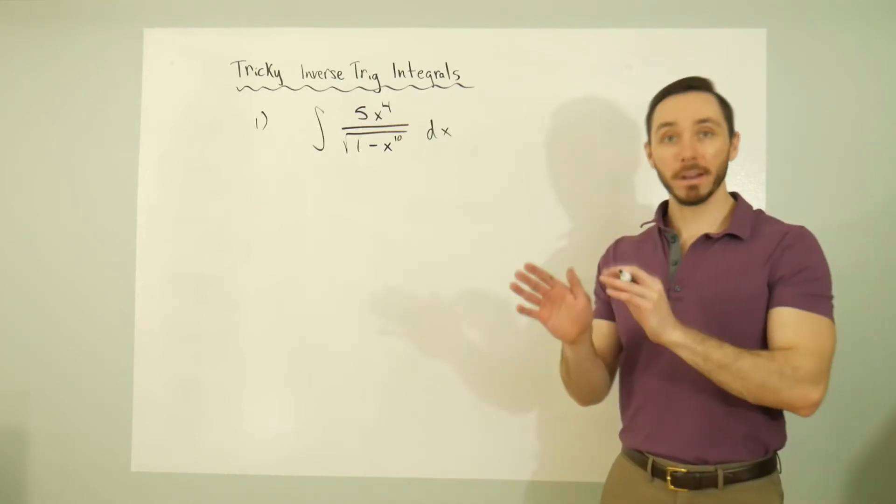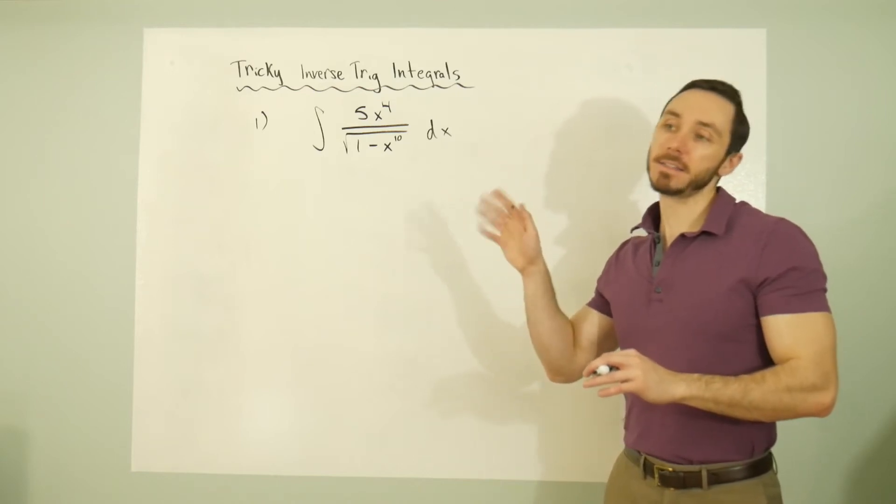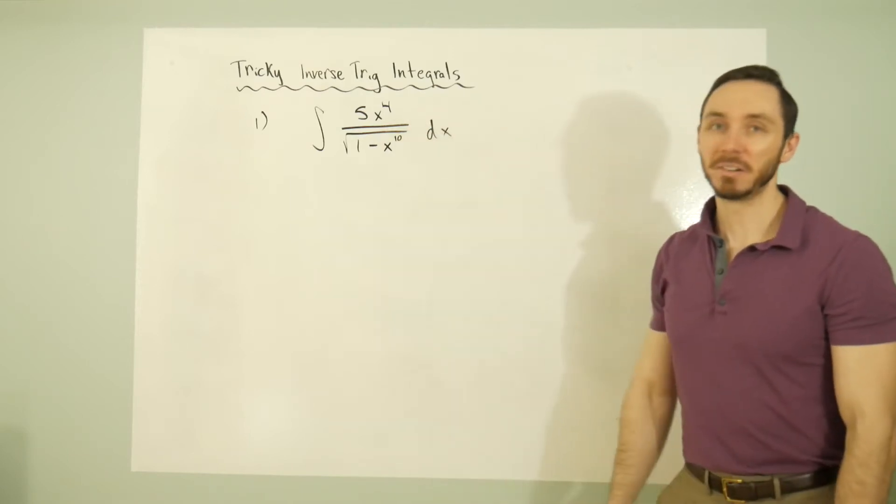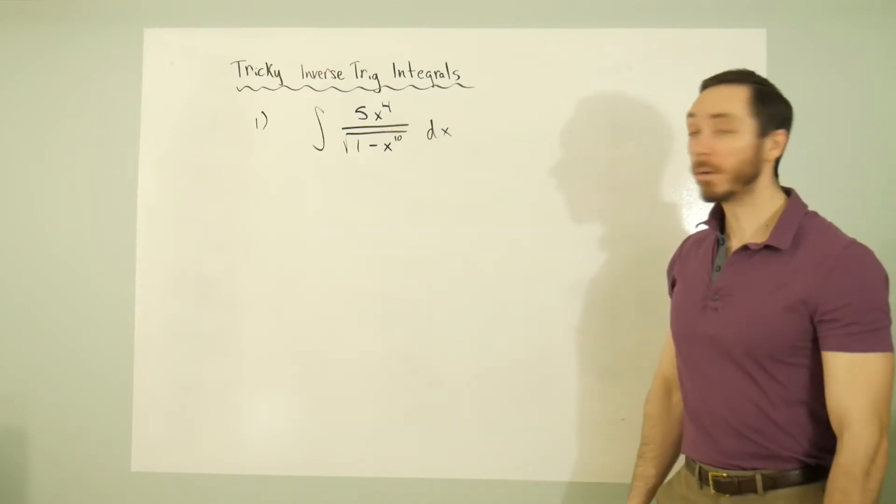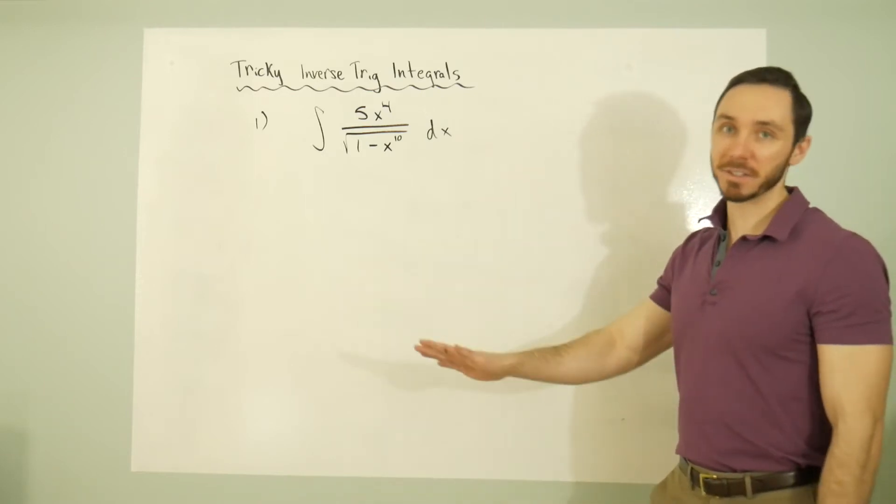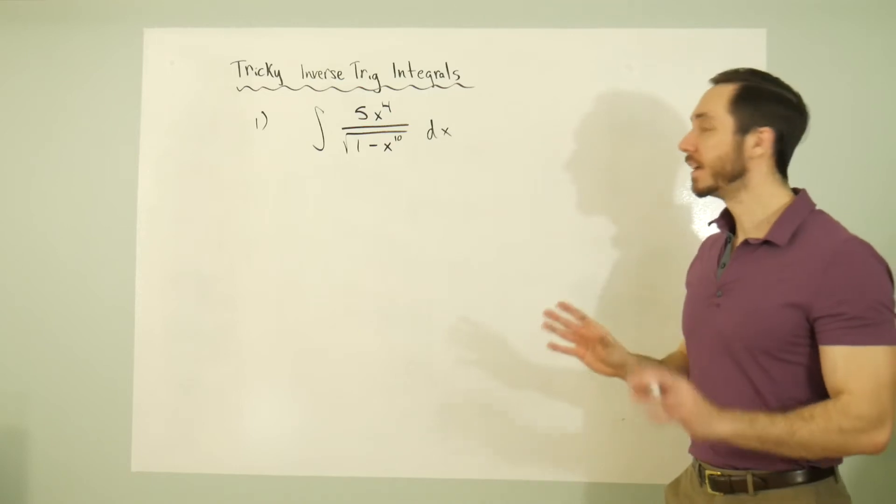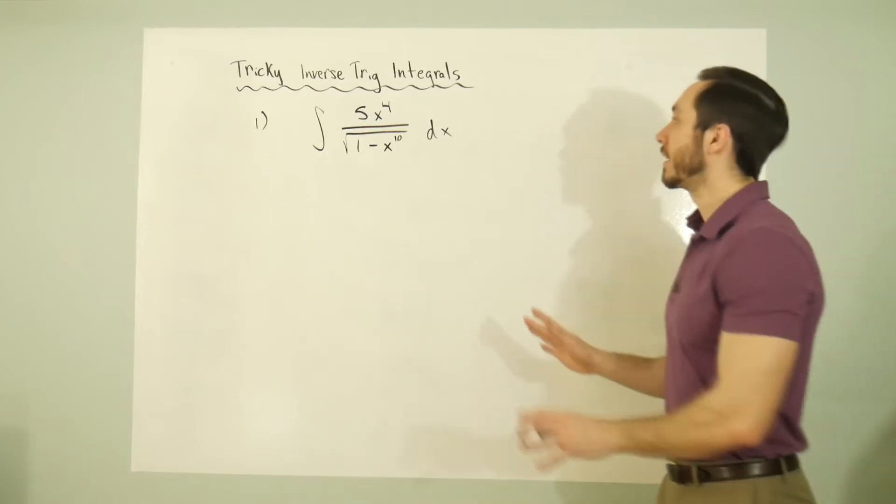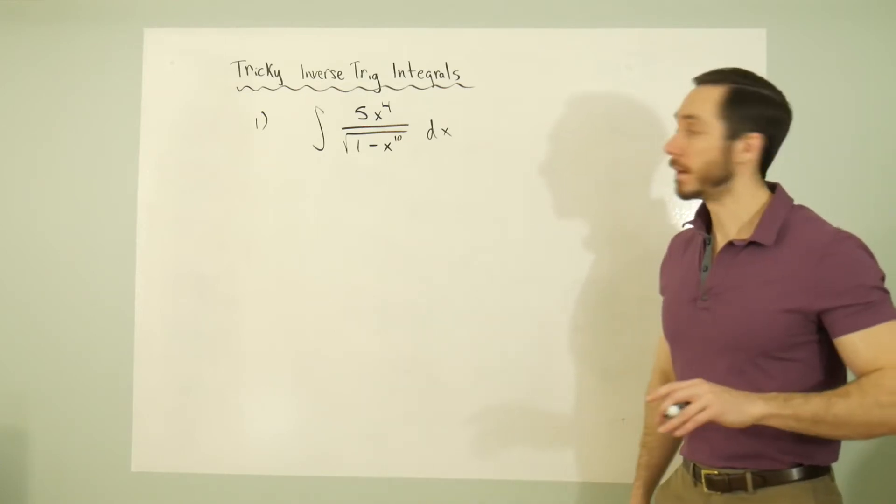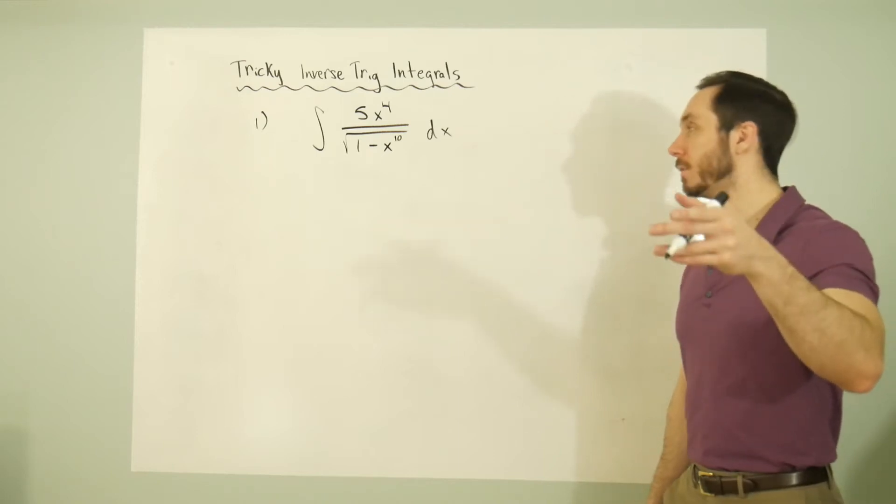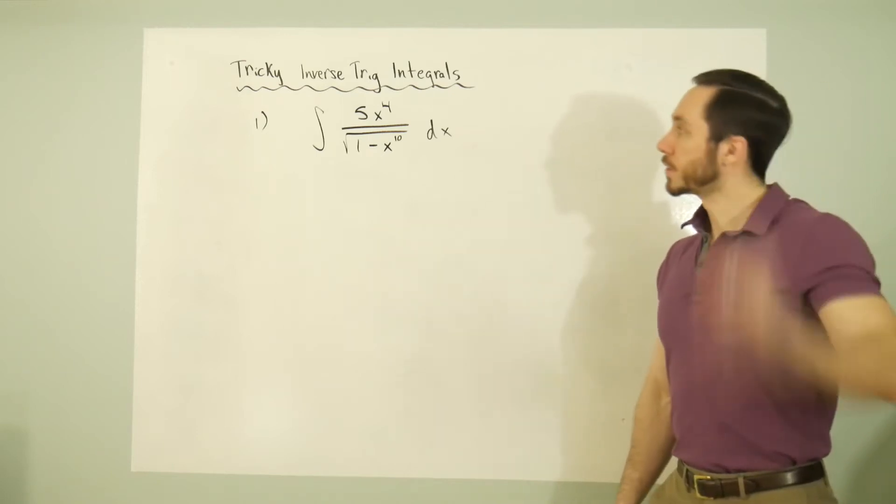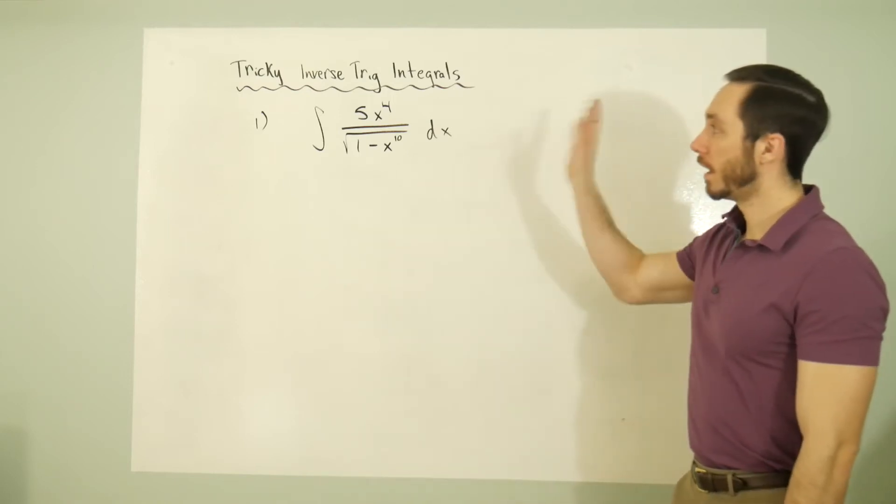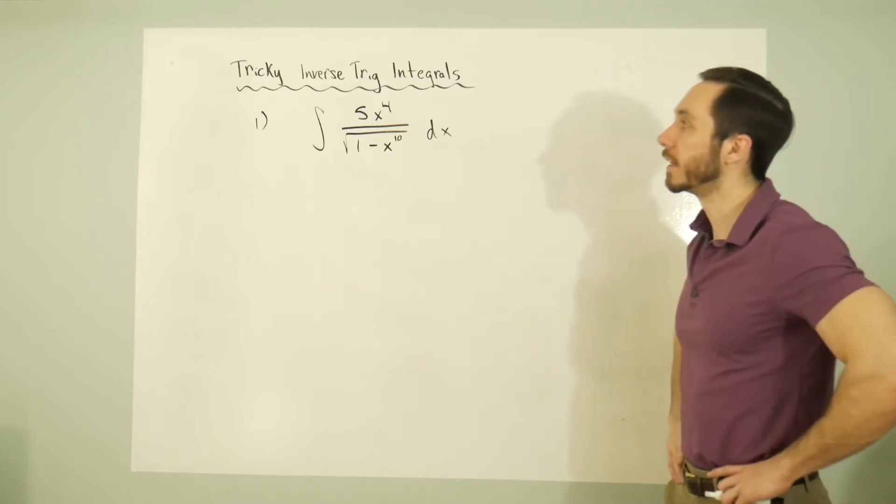It appears to sort of take on the form but not really, because you typically want a one up top in your numerator. Sometimes if it's a number, it's not a big deal. You can pluck it out, put it on the outside of the integral. But that's an x^4 and that's not right. This is still going to end up being an inverse trig solution, however you have to be a little creative here.